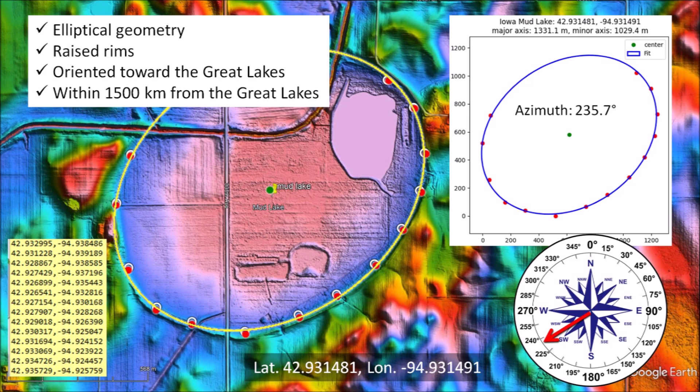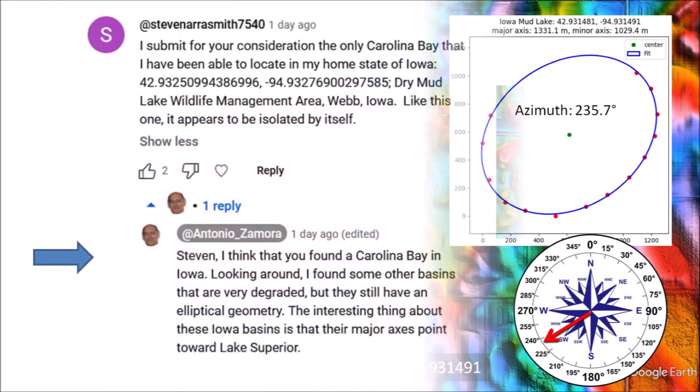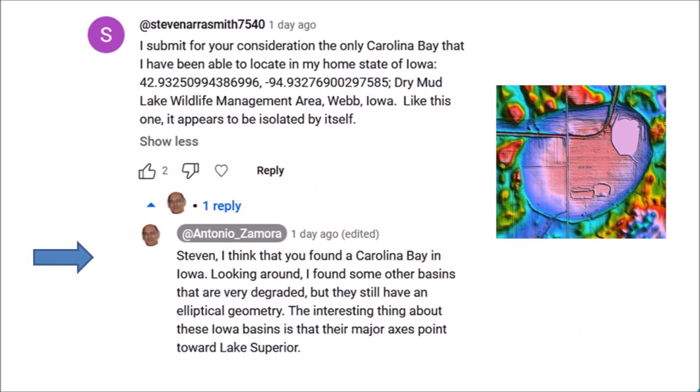The basin has an elliptical geometry — check. Raised rims — check. It is oriented toward the Great Lakes — check. It is within 1,500 kilometers from the Great Lakes — check. This basin has all the characteristics of a Carolina Bay, so it is a Carolina Bay. The basin has a length of 1,331 meters, a width of 1,029 meters, and a heading of 235.7 degrees. Extending the heading toward the Great Lakes, we find that it leads to Lake Superior at a distance of 793 kilometers. I replied to Steven: I think you found a Carolina Bay in Iowa.